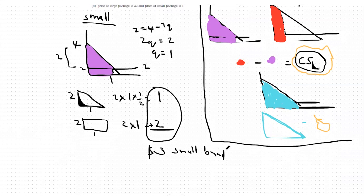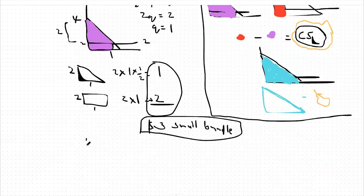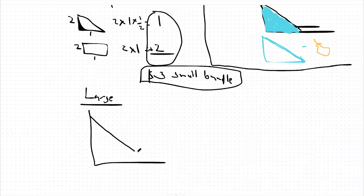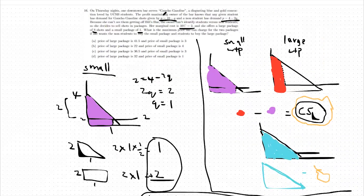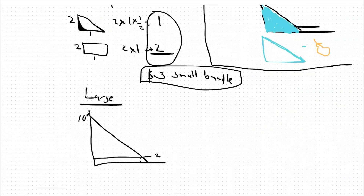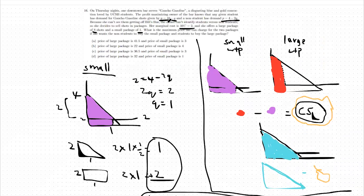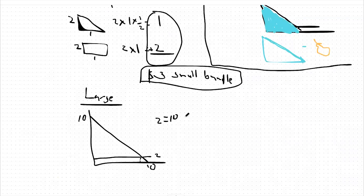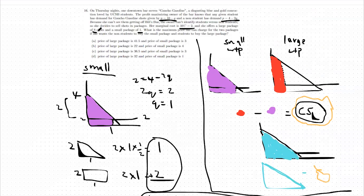The $3 small bundle price will also be useful for calculating the large bundle price. The large willingness to pay consumer has a demand curve of P = 10 − Q, so we plot 10 on the y-axis and 10 on the x-axis with a marginal cost line at $2. Plugging in price = 2: two equals ten minus Q, so Q equals eight. The large consumer purchases eight units at marginal cost, which is also our target quantity for the large bundle.